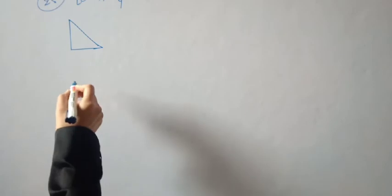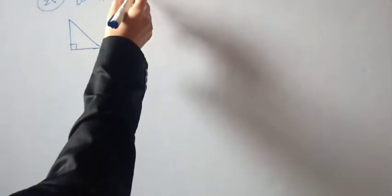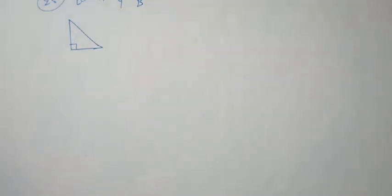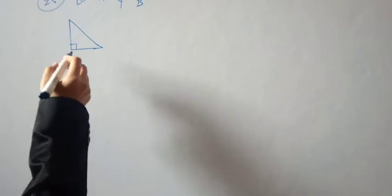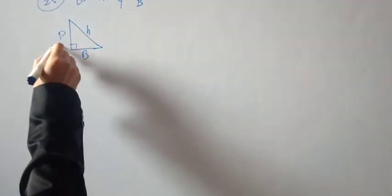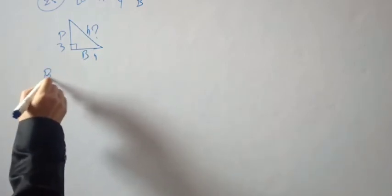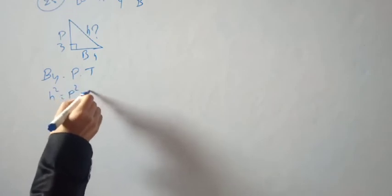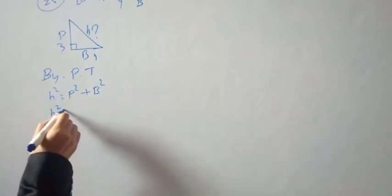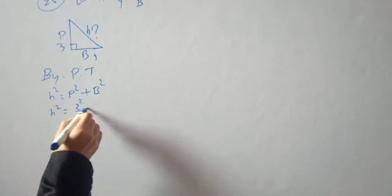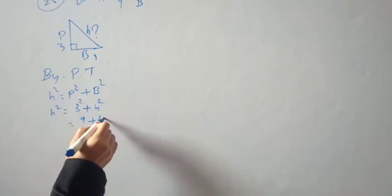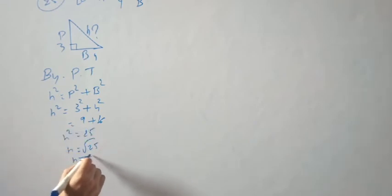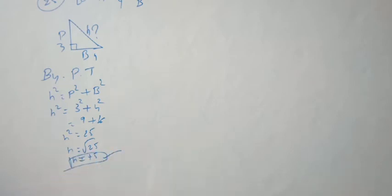Draw a right triangle. Tan A = perpendicular/base = 3/4, so perpendicular = 3, base = 4. Find the hypotenuse using Pythagoras: hypotenuse² = perpendicular² + base² = 3² + 4² = 9 + 16 = 25, so hypotenuse = 5 (taking positive value).